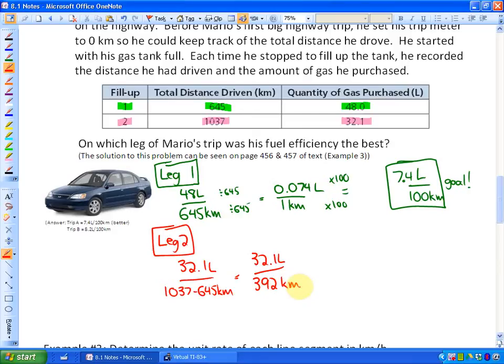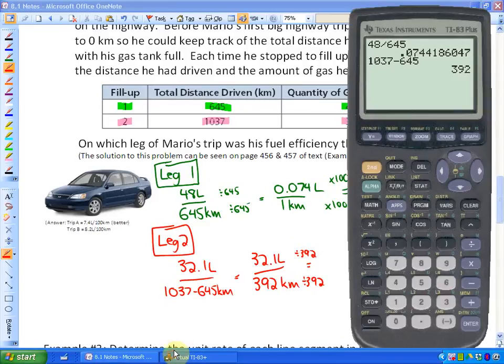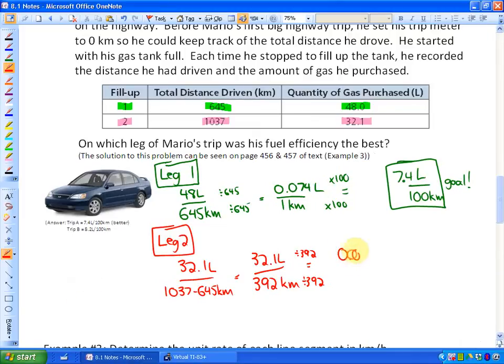In order to compare rates we have to have similar units as well as have the numerical value in the second unit be the same. So in order to find a unit rate if I divide by 392, 32.1 divided by 392 gets me 0.082. So 0.082 liters per one kilometer.